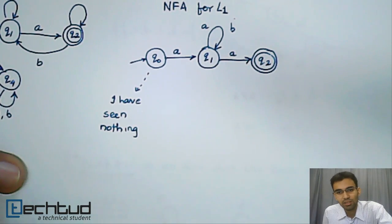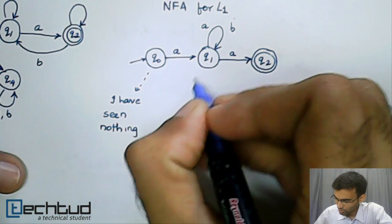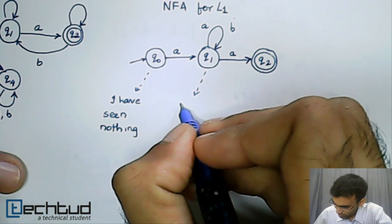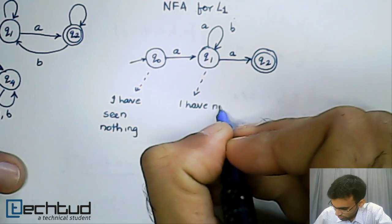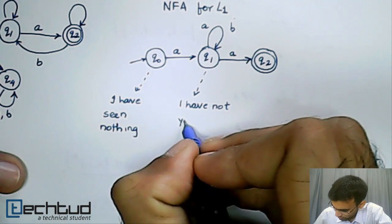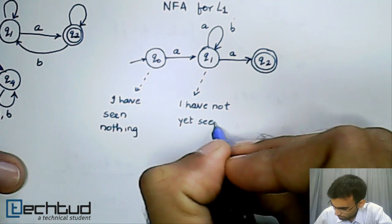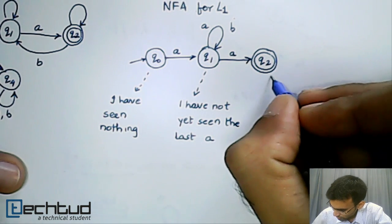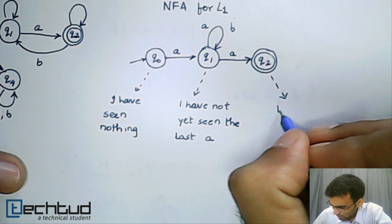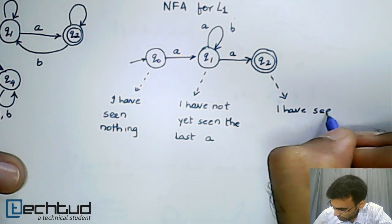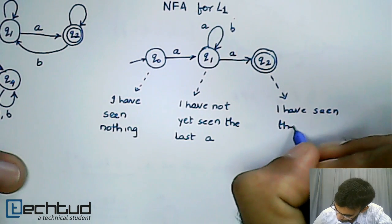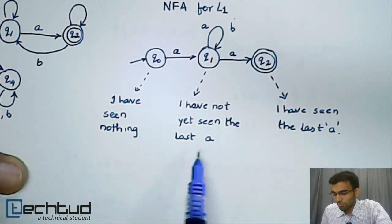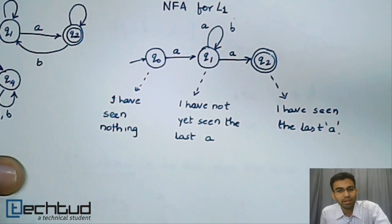This is my non-deterministic finite automata. Q1 says that I have not yet seen the last A, and Q2 says I have seen the last A. These are essentially implicit forms of remembering where I am in the system.